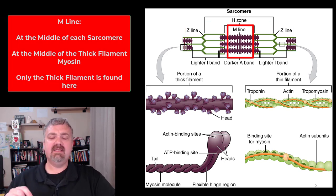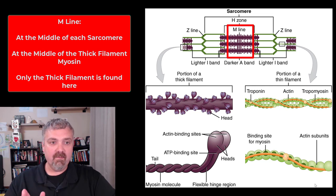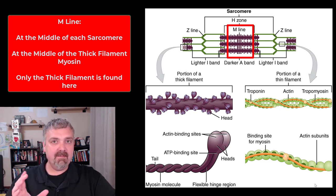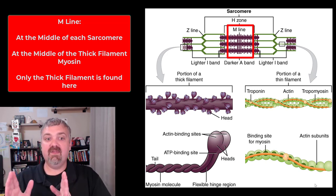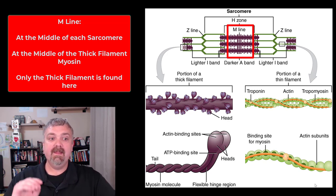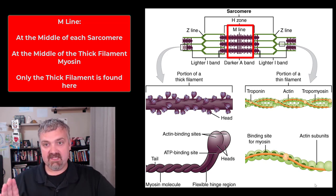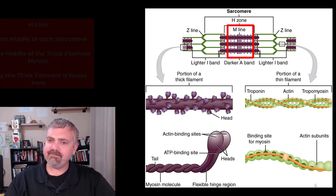Next we have the M lines. Like the name implies, they're going to be found in the middle — in the middle of the myosin thick filament. It's easy to remember: M for middle, M for myosin. So the M line is in the middle of each sarcomere and that's where the thick filament myosin is located. The M line only contains thick filaments, myosin, while the Z line only contains the thin filaments, actin.